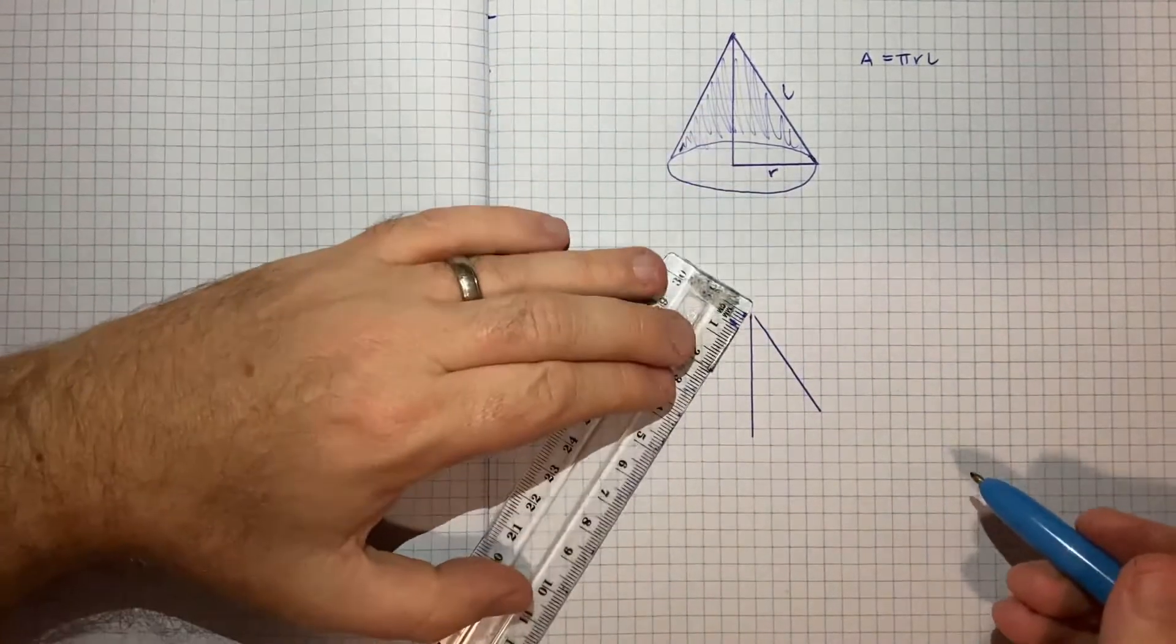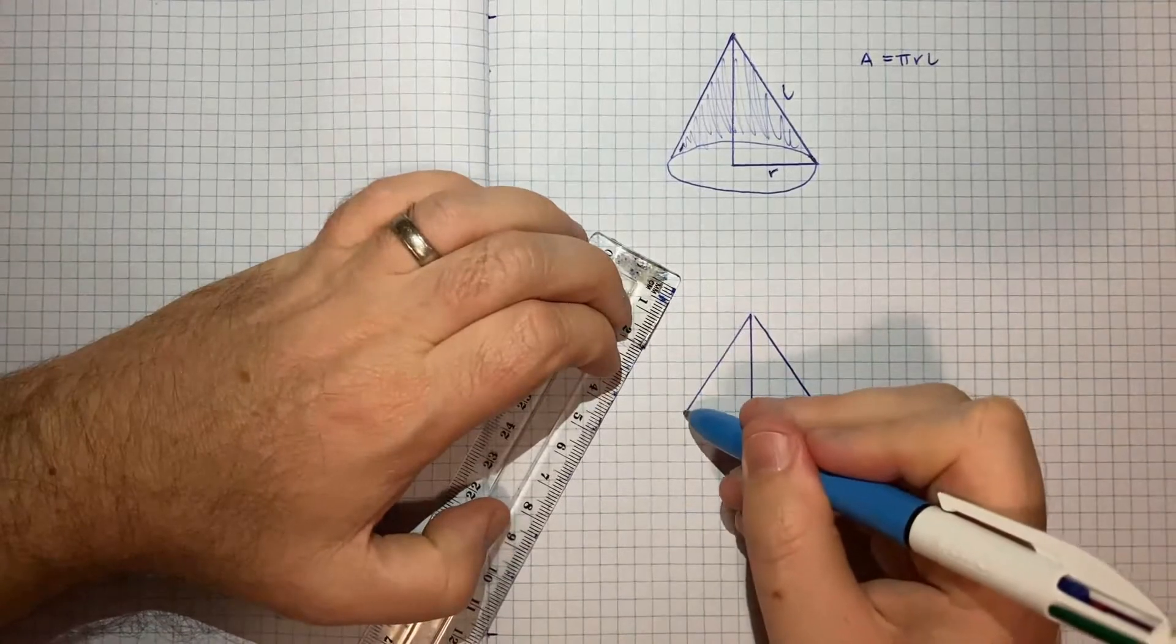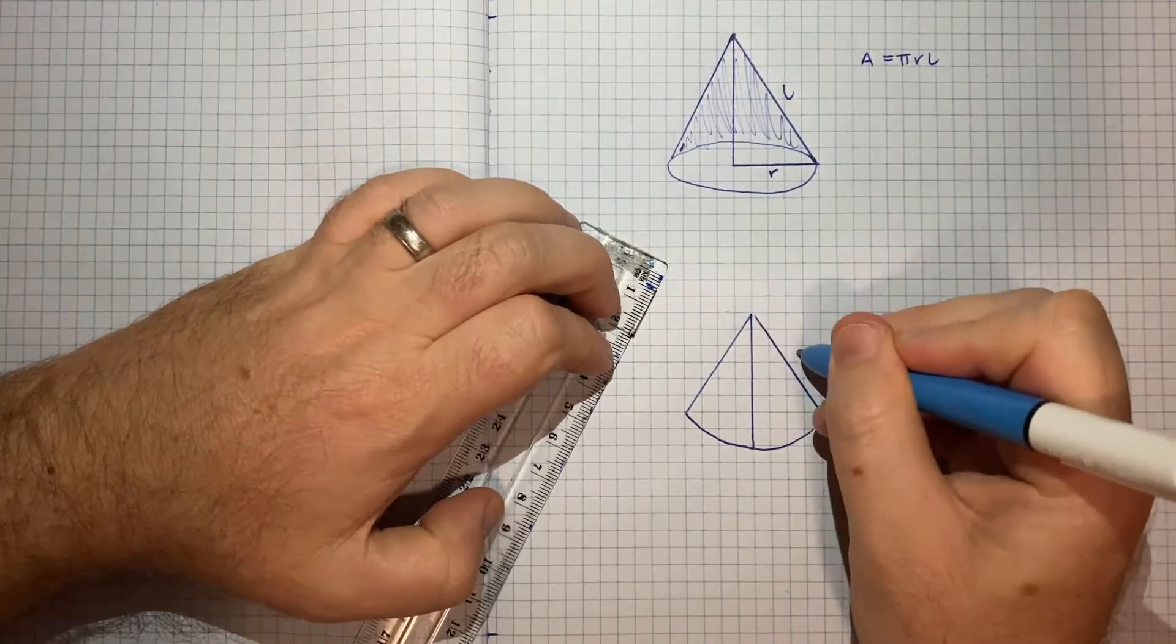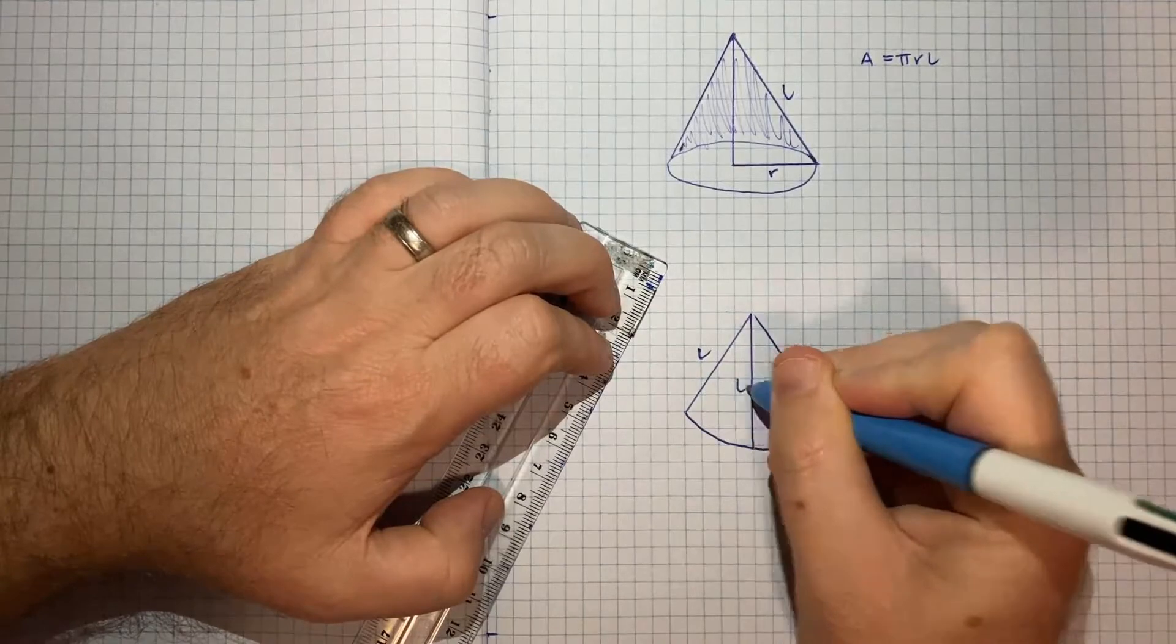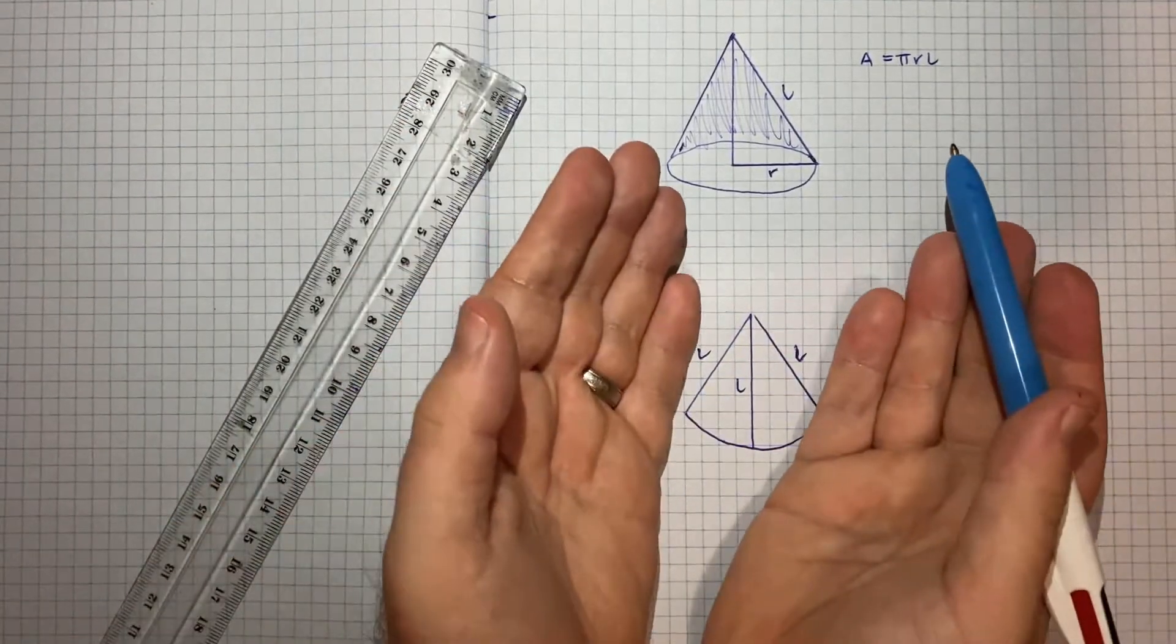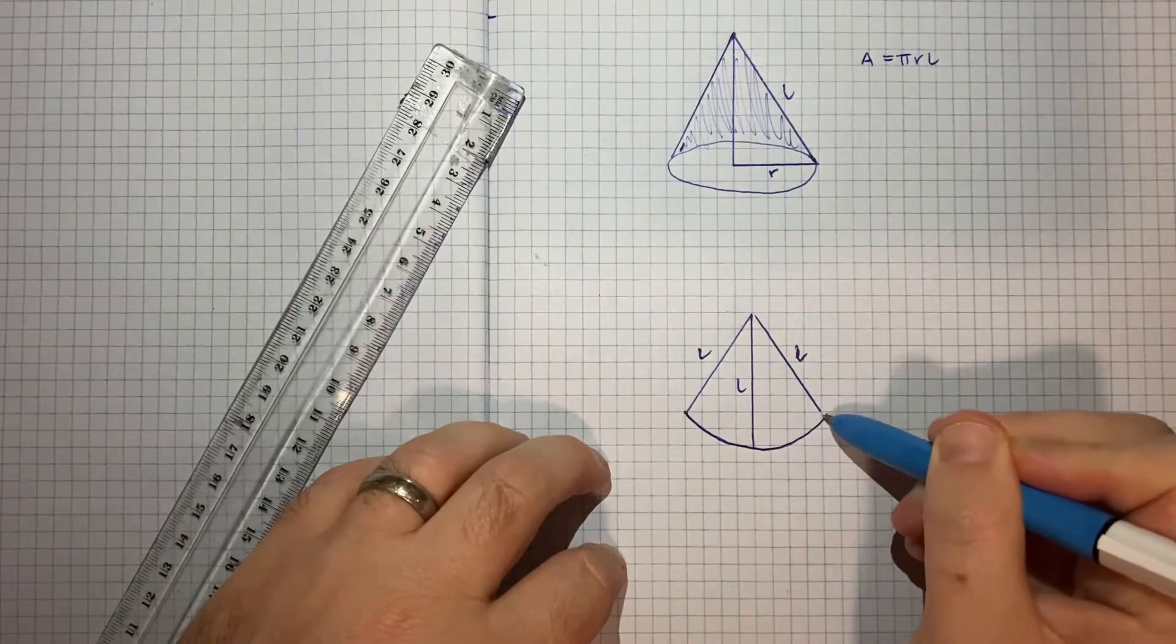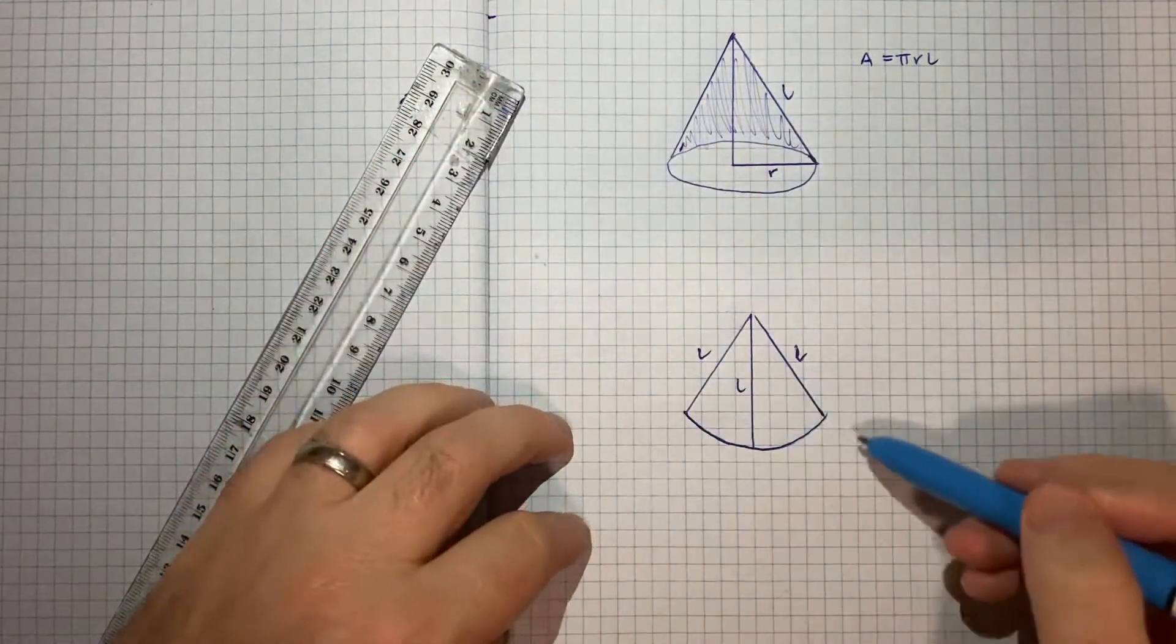This obviously won't be drawn perfectly to scale but hopefully you get the idea. You'd basically get this arc where the length here is L and here is L and this is also L. So basically if you had an arc like this and you were to kind of wrap it together you'd end up with a cone with a circular base. So all I've done here is the reverse. I've taken the cone and cut it to then flatten it out.